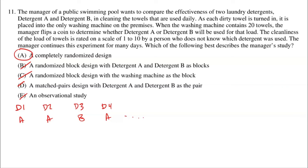Some students get nervous about this question because they wonder if all towels could get detergent A since it's just a coin flip. But over many days, it would be very unlikely to get heads every single time, so we'd end up with some towels washed with A and some with B, allowing a good comparison. The best answer is a completely randomized design — some towels got A, some got B.